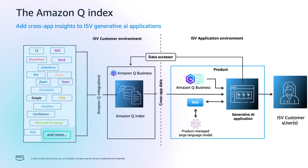As you can see, in this integration, the end customer is owning and governing its own Q-Index. However, there is another option where ISV customers allow the ISV to manage their Q-Index. In this case, the ISV will manage their customers' Q-Indexes in their own AWS account and manage the connectivity to their customers' underlying data sources and systems. Please look at the AWS documentation to learn more about these options.